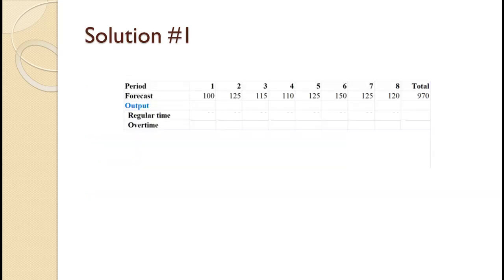The slide shows the forecast laid out on the planning grid. In period 1, we produce the full 90 in regular production. That leaves 100 minus 90 equals 10 to be produced in overtime. Under the chase strategy, all 100 used in period 1 must be produced in period 1. For period 2, we produce the full 90 in regular production. That leaves 125 minus 90 equals 35 to be produced in overtime.